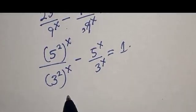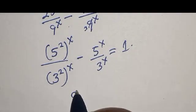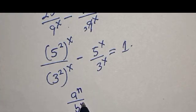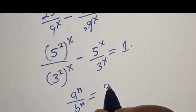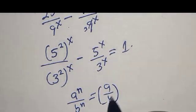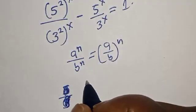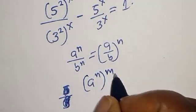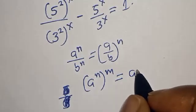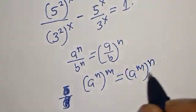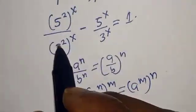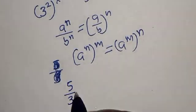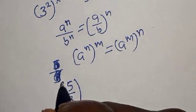If you have a raised to power n over b to the power of n, this is equal to (a over b) to the power of n. Also, if you have a raised to power n to the power of m, this is equal to a raised to power m to the power of n. So this can be written as 5 over 3 to the power of s squared.